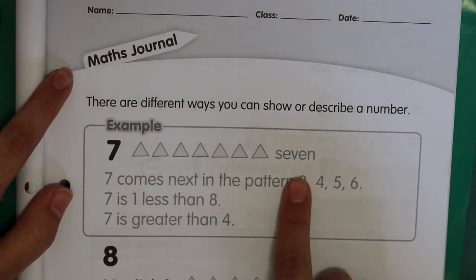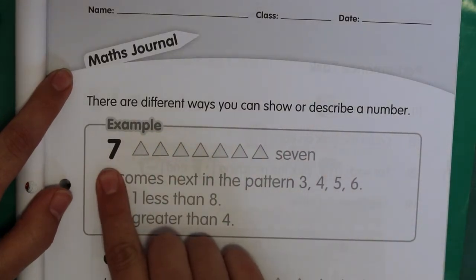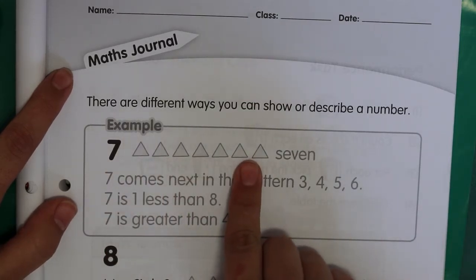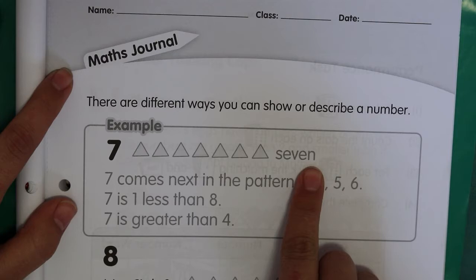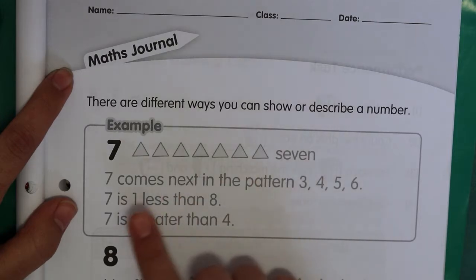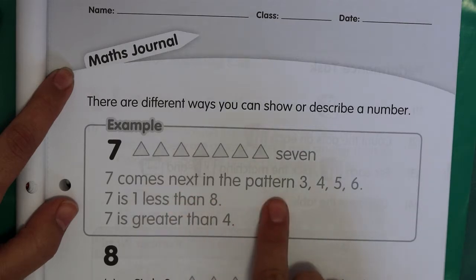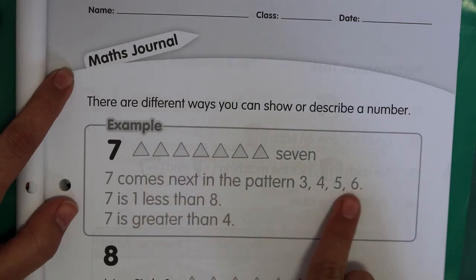Here they've got an example box, so you could write the number 7 like that. You could have 7 pictures or 7 objects. You could write the word seven. And then some more things about 7. Seven comes next in the pattern 3, 4, 5, 6. So next would be 7.